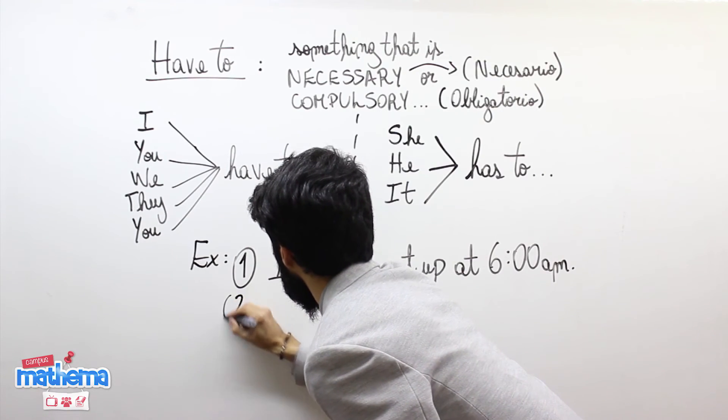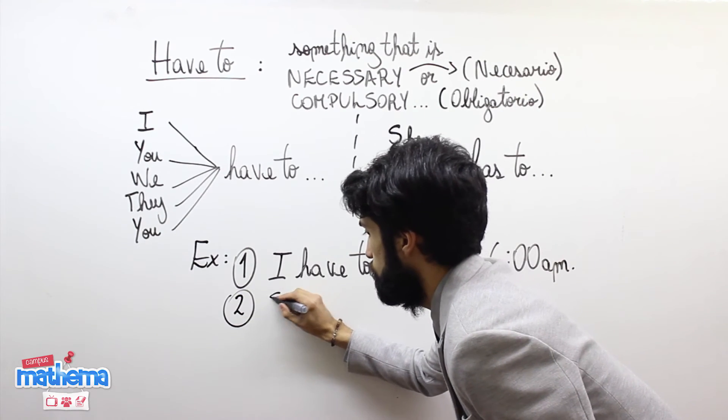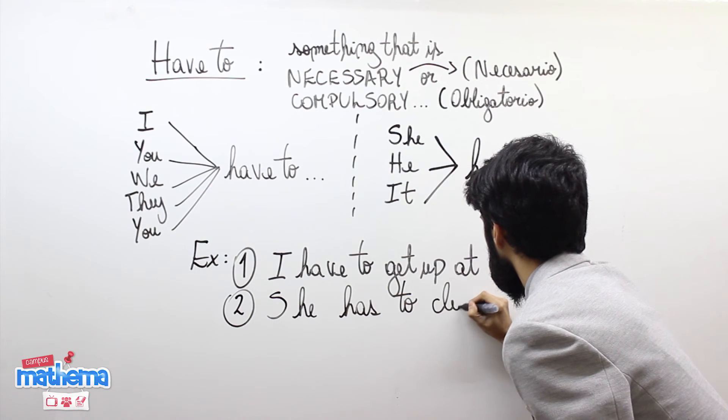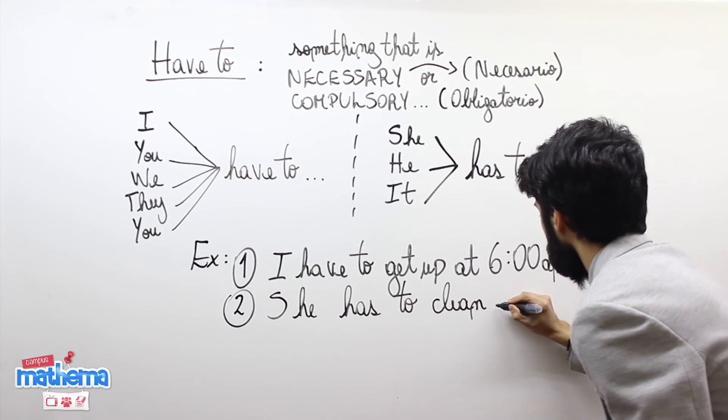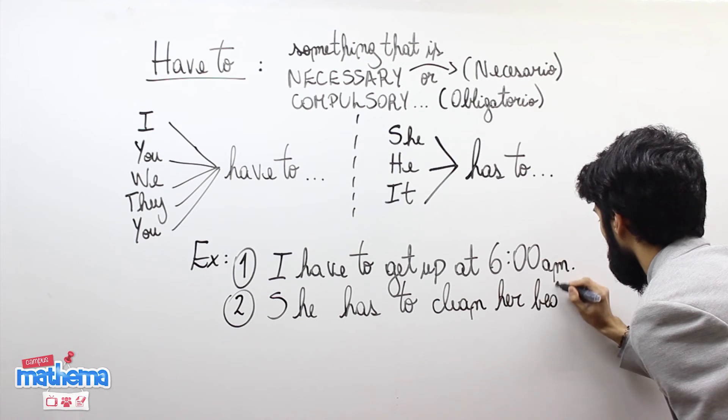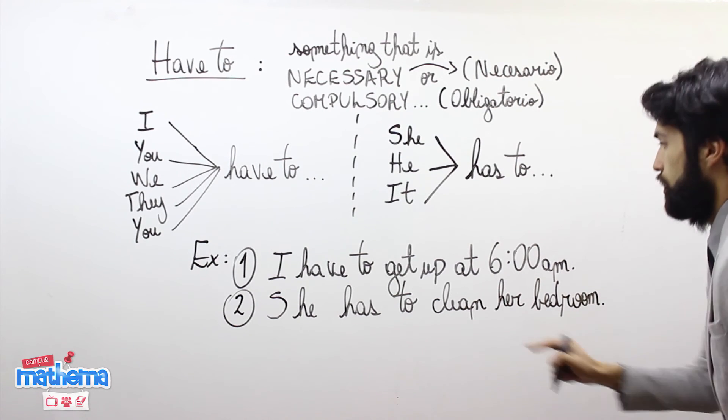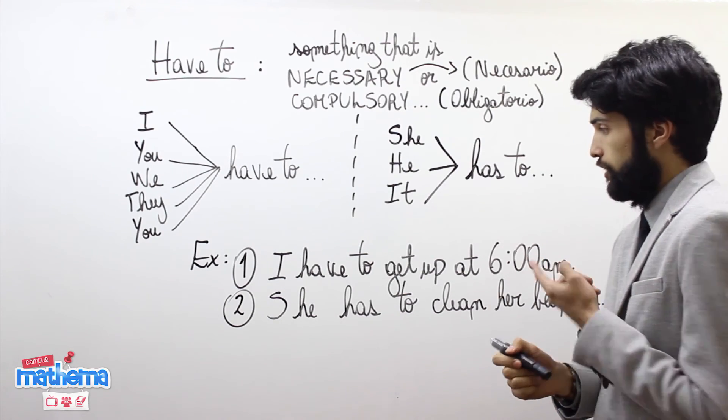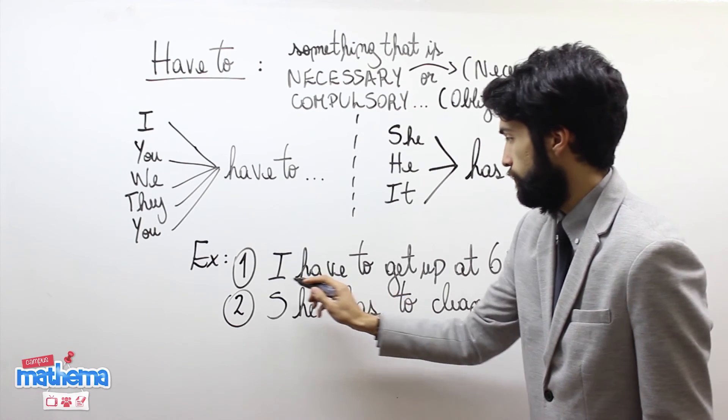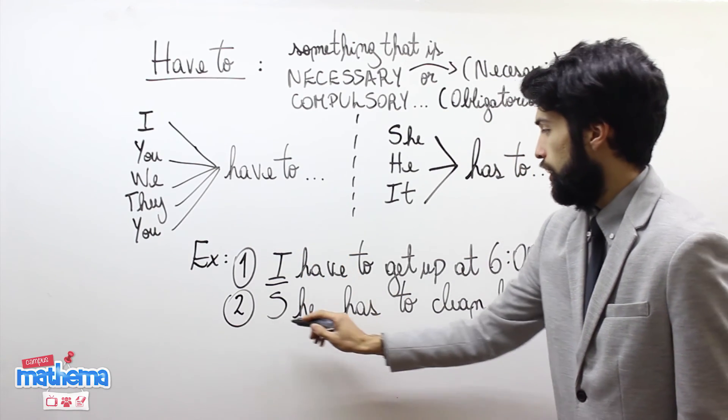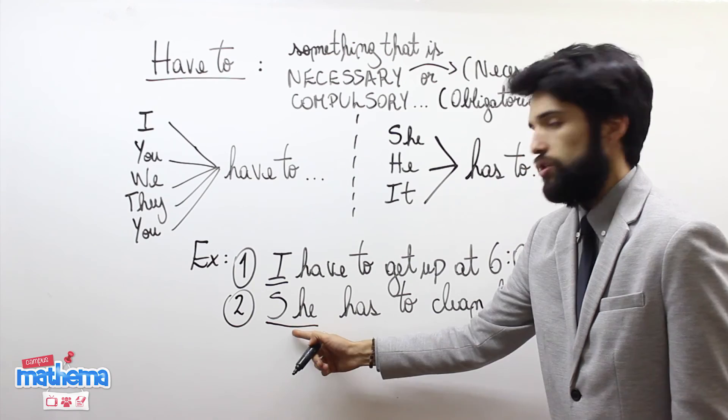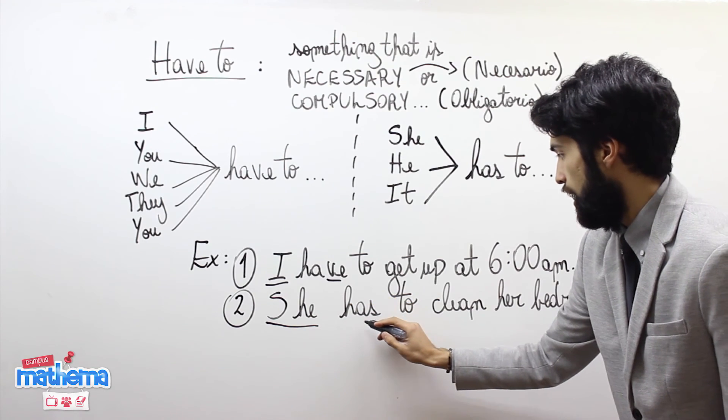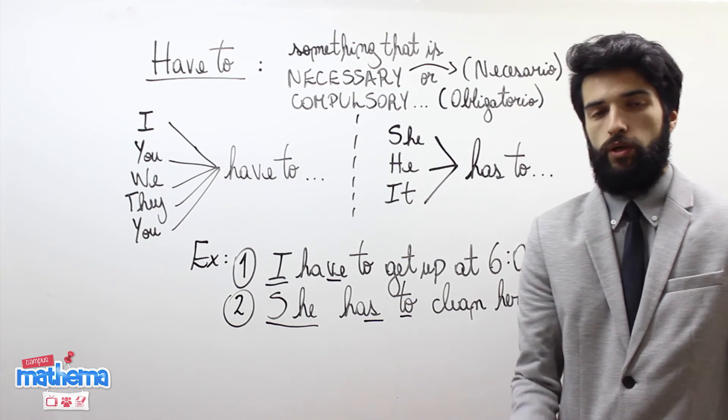Example number two. She has to clean her bedroom. ¿Cuál es la diferencia que ustedes pueden ver? La primera, tenemos el pronoun I y el pronoun she. Y la segunda esencial, I have to and she has to.